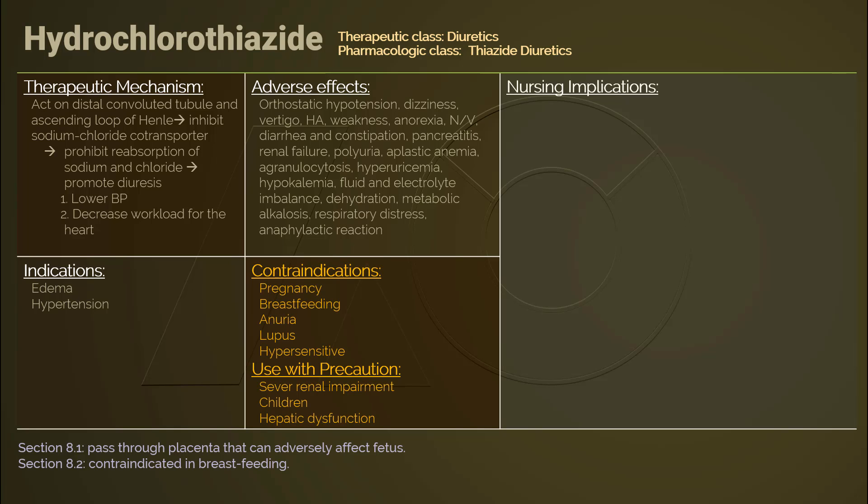Contraindications for hydrochlorothiazide include pregnancy, breastfeeding, anuria, systemic lupus, and hypersensitivity to thiazides or sulfonamide derivatives. Hydrochlorothiazide should be used with caution in cases of severe renal impairment, hepatic dysfunction, and in children.